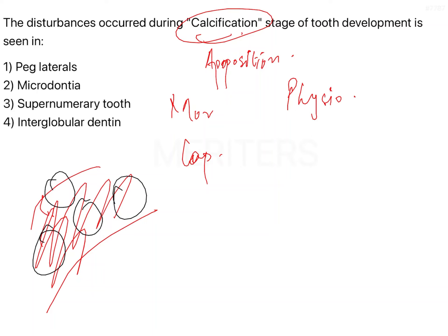So your dental tissues are ultimately getting mature and calcified. Among the options, peg laterals are, according to oral pathology, a developmental disturbance in the shape of the tooth. Because it is a disturbance in shape, the calcification has occurred normally. That means peg laterals are a disturbance in the morphodifferentiation stage.